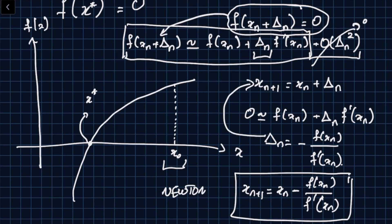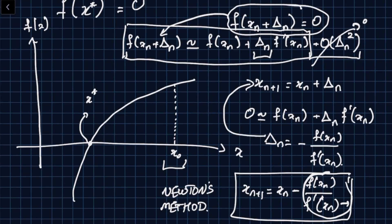The key assumption is that at each current point we use a linear approximation of f via Taylor's series. This means the derivative f'(x_n) must not be zero at any iteration point — otherwise the step blows up to infinity and we cannot track the solution.